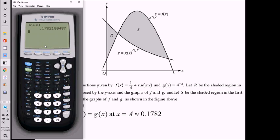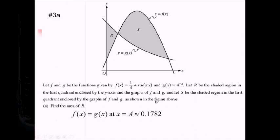Let me go back and do second, trace, option 5, intersect again to find that other intersection point. Enter, enter, enter — and that's an intersection of 1. That's very tidy compared to the decimal we got for the first one. So we've found all the intersection points we're going to need for this problem.